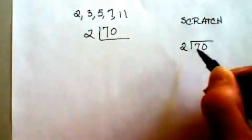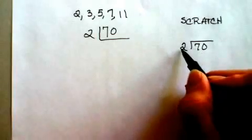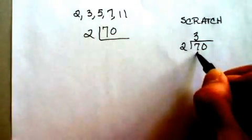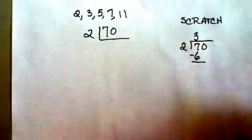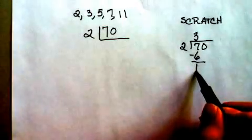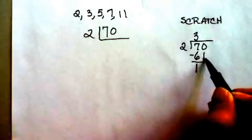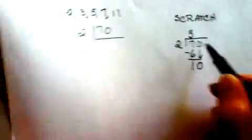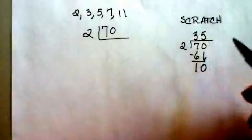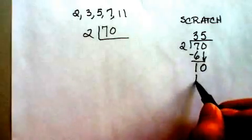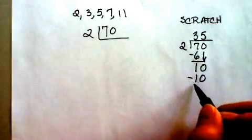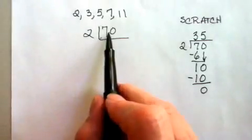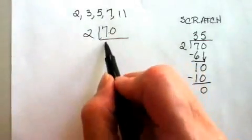70 divided by 2. Does 7 divide by 2? 3 times. 3 times 2 is 6. 7 minus 6 is 1. Bring down my 0. 10 divided by 2 is 5. And 5 times 2 is 10. Subtract. Remainder 0. So 70 divided by 2 is 35.